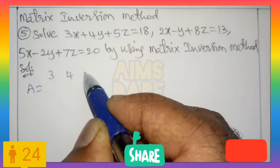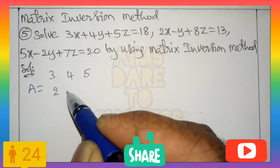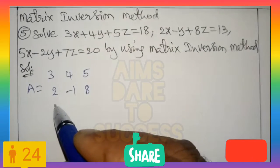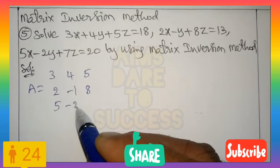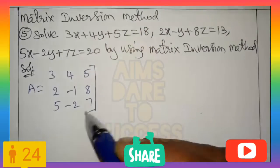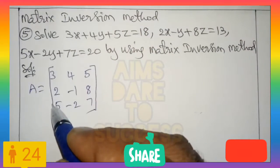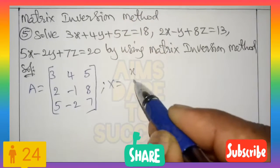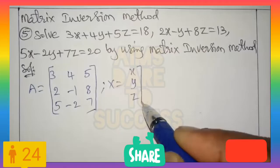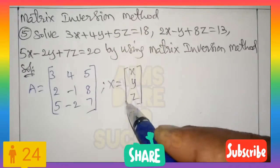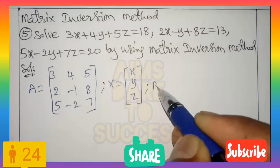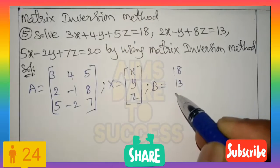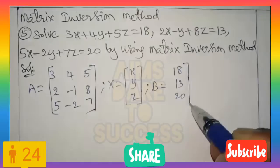By using the Matrix Inversion Method, you can write matrix A using the xyz coefficients from the given 3 equations. They are: 3, 4, 5 / 2, −1, 8 / 5, −2, 7. Next, you can write capital X matrix — the variables x, y, z written in a column. And B means the constant values: 18, 13, 20 from the right side of the 3 equations, written as a column.